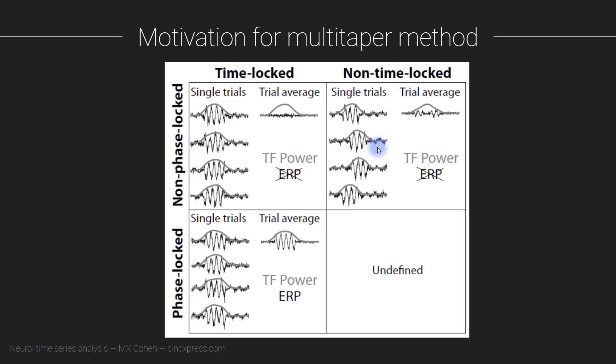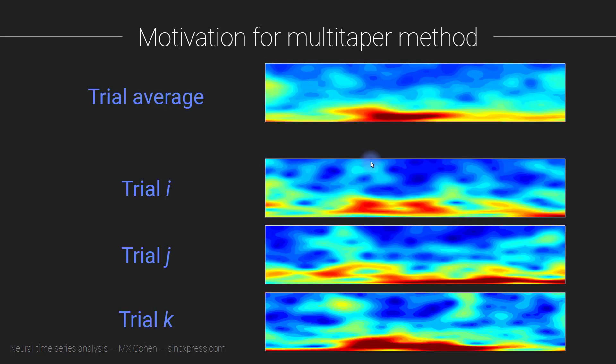So what you want to do is have a method that is more robust to these temporal jitters, essentially by smoothing over frequency and over time to allow you to identify these features and average them together. So that's kind of the idea.